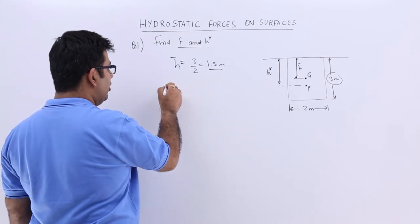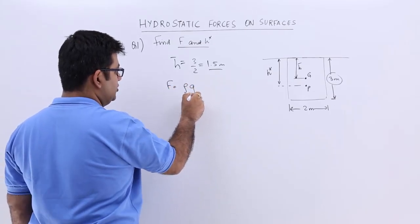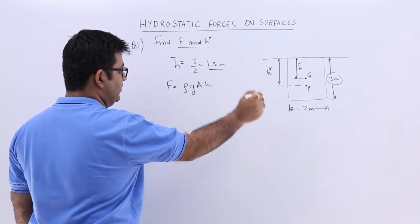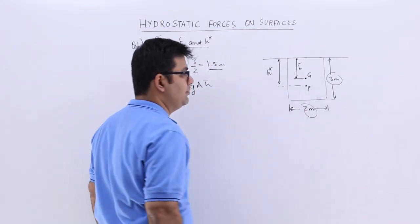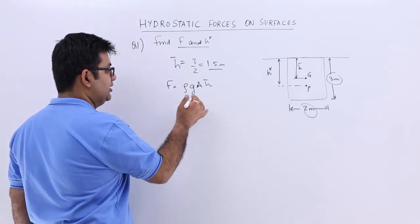So the value of F we know is ρ into g into A into h bar. So area of a rectangle is very simple, 2 into 3 is 6 meter square. So let's say it is water,